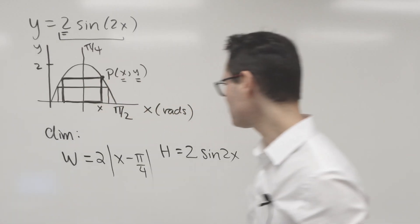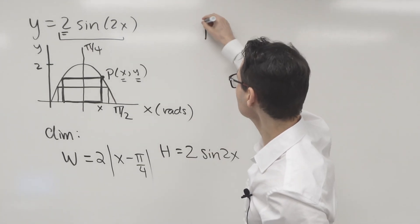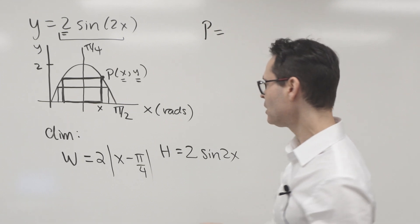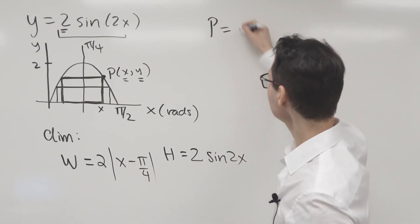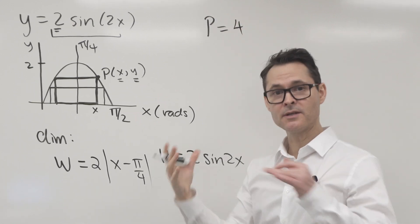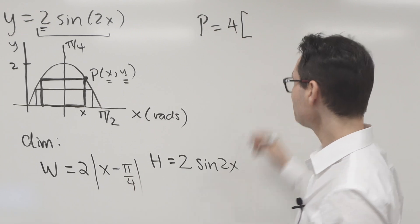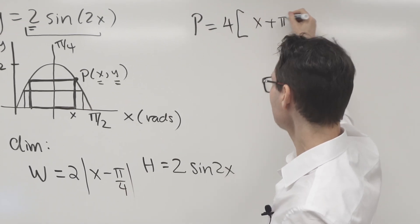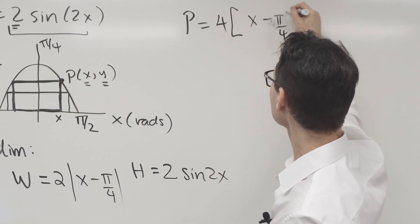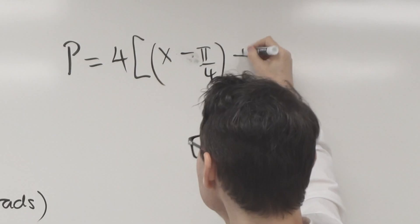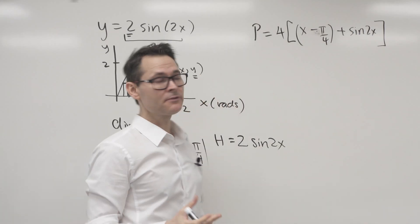This gives us enough information to set up a perimeter function. So the perimeter is going to be equal to two times this plus this, which I also notice both have two. So I'm going to take a two out to join with the doubling of those dimensions. And then I'm going to add x minus pi over four and add to that the sine of two x. So there's my perimeter function.